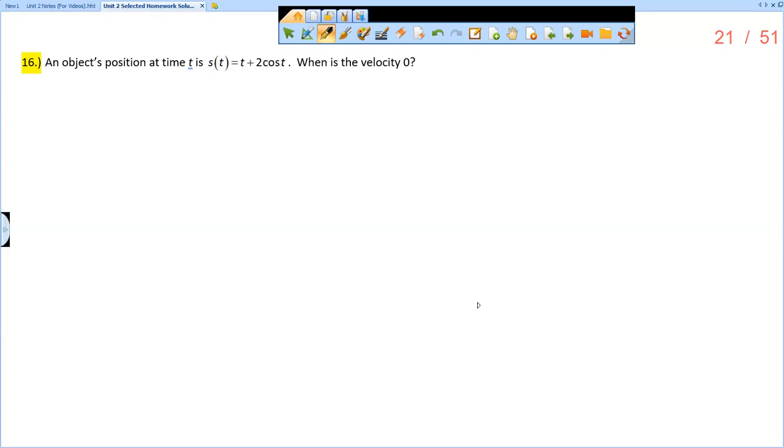This is the solution video for section 2.3, problem number 16. It says an object's position at time t is s of t equals t plus 2 cosine t. When is the velocity equal to zero?